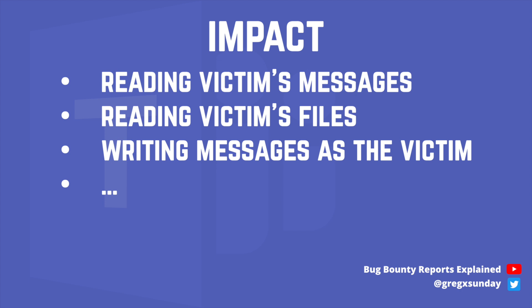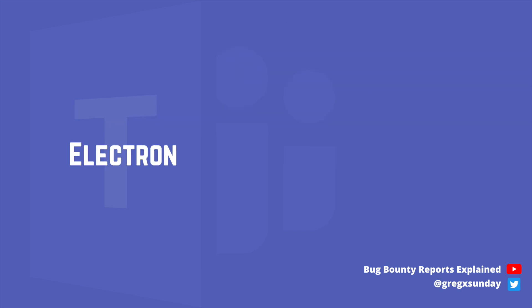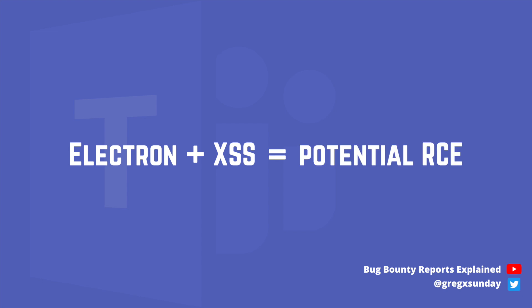But Teams can also be used as a standalone application on Windows, Linux, and macOS. It's created in Electron, which uses JavaScript as the backend language. That means that potentially, XSS can be turned into executing remote commands on victims' computers, effectively taking over their machines.